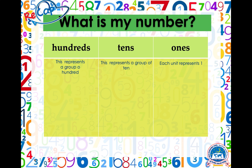Remember we have three houses here: a hundreds house, a tens house and a ones house. The hundreds house represents one group of a hundred, the tens house represents a group of ten, and the ones house represents a group of one.